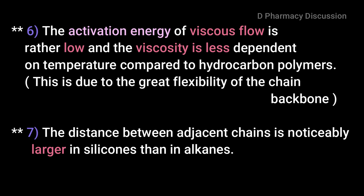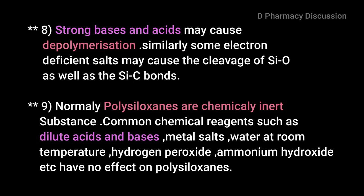The activation energy of viscous flow is rather low, and the viscosity is less dependent on temperature compared to hydrocarbon polymers. This is due to the great flexibility of the chain backbone; the distance between adjacent chains is noticeably larger in silicones than in alkanes. Strong bases and acids may cause depolymerization; similarly, some electron-deficient salts may cause cleavage of Si-O as well as Si-C bonds. Normally, polysiloxanes are chemically inert — common reagents such as dilute acids and bases, metal salts, water at room temperature, hydrogen peroxide, and ammonium hydroxide have no effect on them.